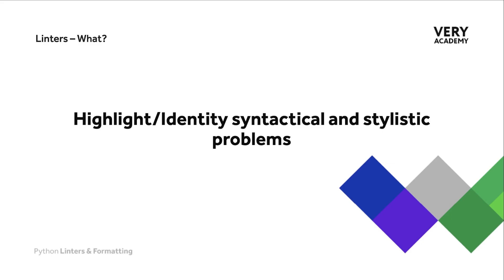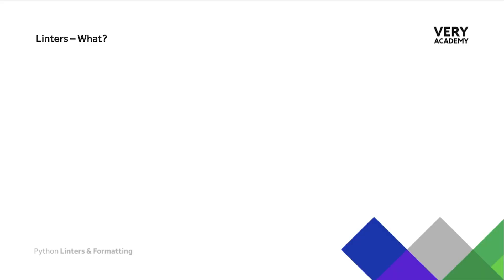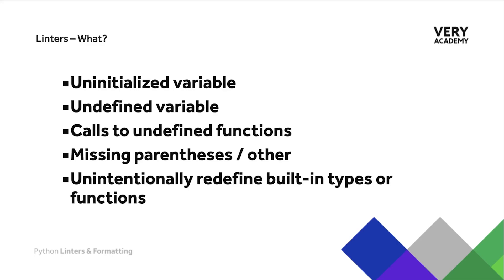In the previous example, we saw highlighting and identifying potential syntactical or stylistic problems. Linting tools will be specific to your programming language. Moving our focus to Python programming, think about some common mistakes that you might make in your code. Python linting tools can help you detect errors. Whether you are a beginner or an experienced programmer, we are only human and we tend to make mistakes. Having linting tools that will help us identify common mistakes, such as uninitialised variables or calls to undefined functions, is going to be very useful in the development process.